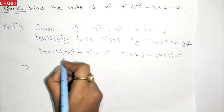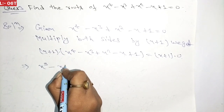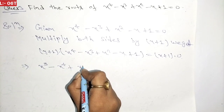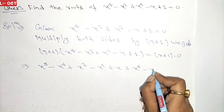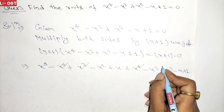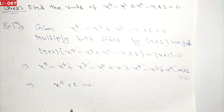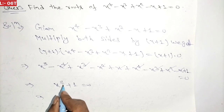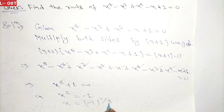Multiplying (x + 1) into x⁴ minus x³ plus x² minus x plus 1, we get x⁵ minus x⁴ plus x³ minus x² plus x, plus x⁴ minus x³ plus x² minus x plus 1 equals 0. After cancellation of like terms, this simplifies to x⁵ plus 1 equals 0.